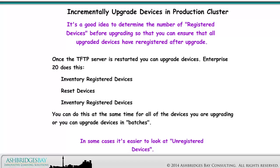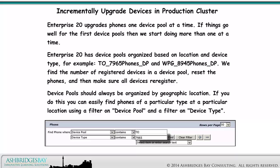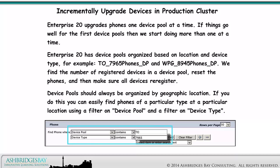Or you can upgrade devices in batches — in some cases it's easier to look at unregistered devices. Enterprise 20 upgrades phones one device pool at a time. If things go well for the first device pools, then we start doing more than one at a time. Enterprise 20 has device pools organized based on location and device type — for example, TO 7965 Phones Device Pool and Winnipeg 8945 Phones Device Pool. We find the number of registered devices in a device pool, reset the phones, and make sure all devices re-register. Device pools should always be organized by geographic location so you can easily find phones of a particular type at a particular location using a filter on Device Pool and Device Type.